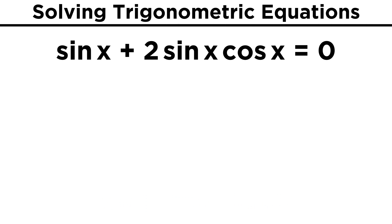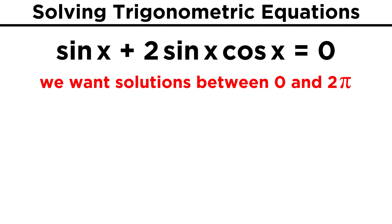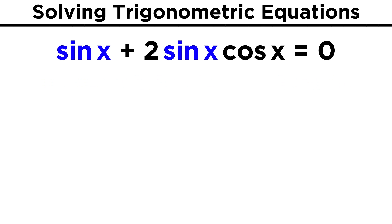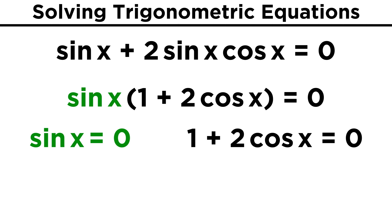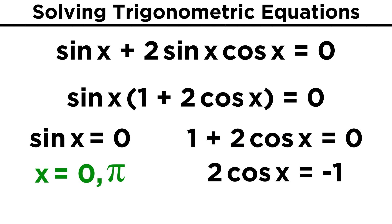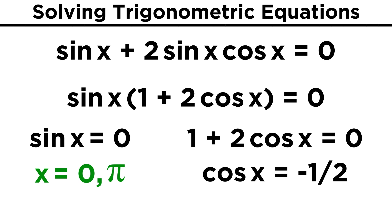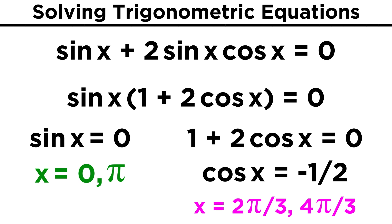There are other situations where we will have to factor in a different way. Take sine x plus two sine x cosine x, solving for the interval from zero to two pi. These two terms have sine x in common, so let's factor it out. That leaves us with sine x times the quantity one plus two cosine x. Now if sine x is zero, this whole side is zero, so zero and pi are solutions, because the sine of zero and the sine of pi both equal zero. Then for this one, two cosine x equals negative one, and cosine x equals negative one half. That means that two thirds pi and four thirds pi are also solutions.